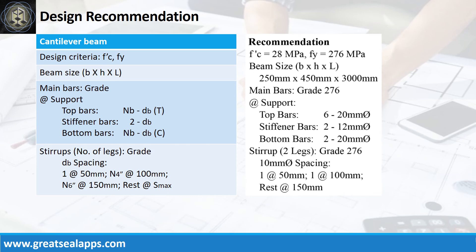Design recommendation as follows: f'c equals 28 MPa, fy equals 276 MPa, beam size is 250 mm by 450 mm by 3000 mm, main bars of grade 276. At support, top bars: 6 pieces 20 mm bar. Stiffener bars: 2 pieces 12 mm bar. Bottom bars: 2 pieces 20 mm bar. Stirrup of 2 legs of grade 276, 10 mm bar spacing: 1 at 50 mm, 1 at 100 mm, rest at 150 mm.